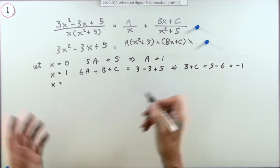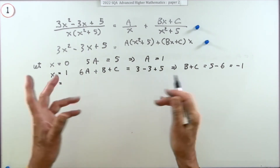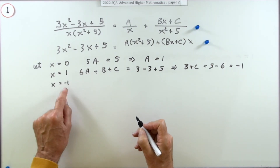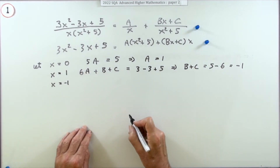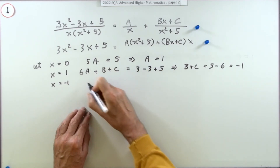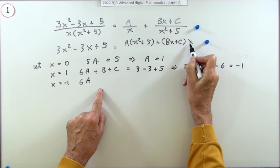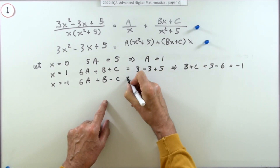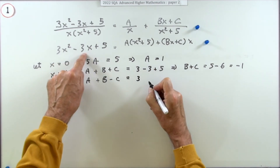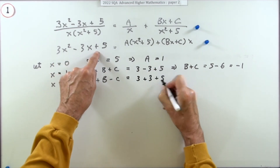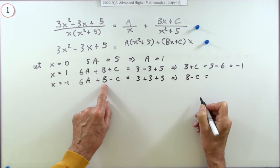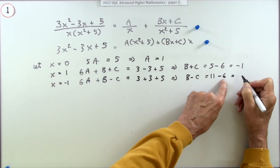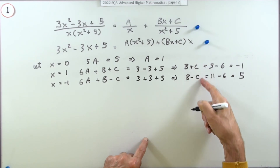Next, choose another value — you could pick 2 to avoid negatives, or negative 1. I'll go with x equals negative 1, just being careful with signs. That still gives 6A on the left. On the right, x equals negative 1 gives negative B minus C, so it's negative B minus C. Working out the right-hand side: 3 plus 3 plus 5 equals 11, take away 6, gives 5. So b minus c equals 5.